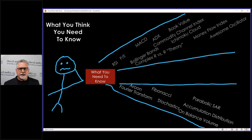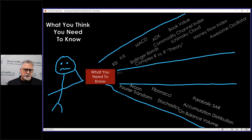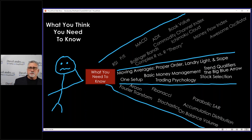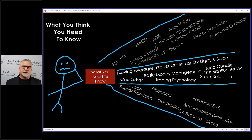The bottom line is what you really need to know, especially if you're just getting started. You will obviously learn things through experience over time, but when you're just starting out you only need a few things to become successful, and then you can build on those things from there. You really only need one setup. Linda Rasky said all you need is one pattern to be successful — and Linda's right. That one setup is probably land-and-life pullbacks, at least when you're just getting started.